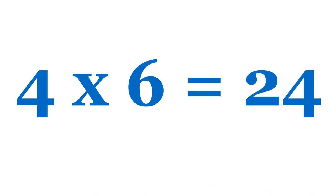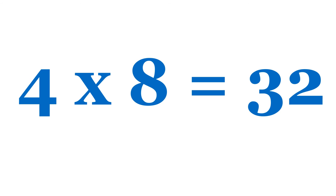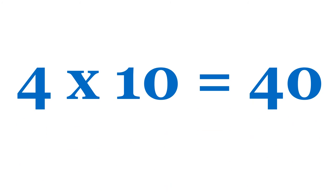Four sixes are twenty-four. Four sevens are twenty-eight. Four eights are thirty-two. Four nines are thirty-six. Four tens are forty.